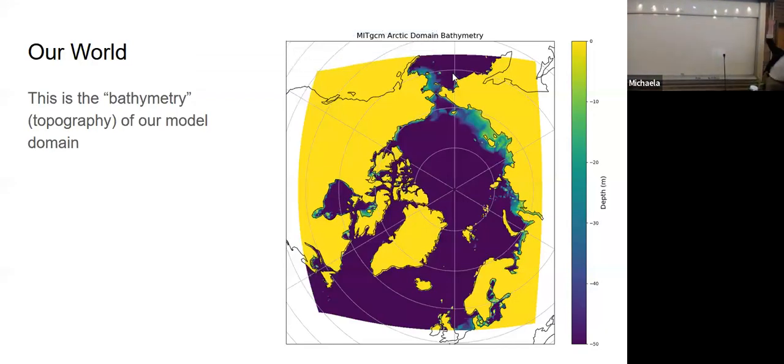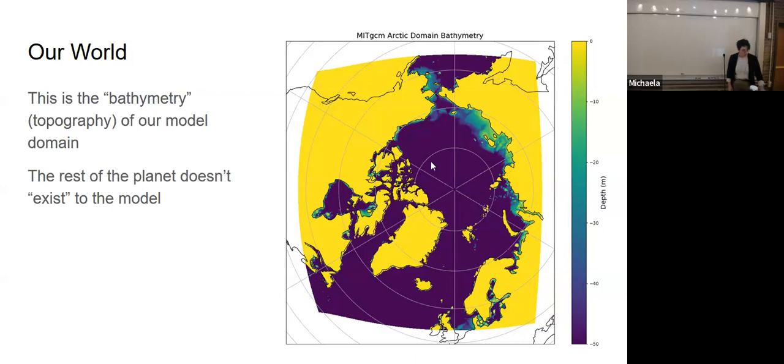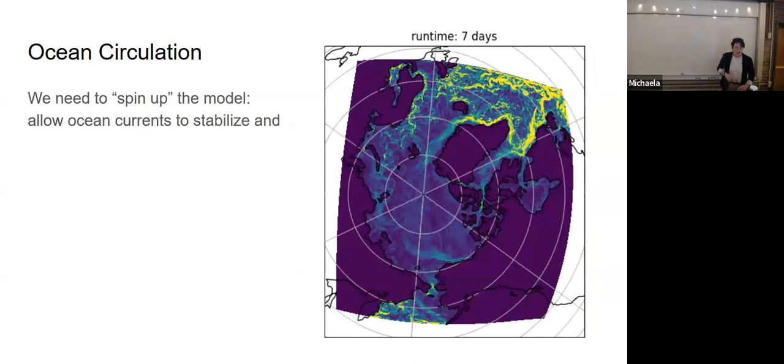What is actually happening? This is the domain of our model. We're using only the Arctic because we're only interested in the Arctic. Anything south of this colorful square doesn't exist as far as the model is concerned. The colors here have to do with depth. Yellow is shallower. Blue is deeper. The land is yellow. The ocean is blue.